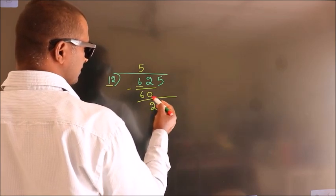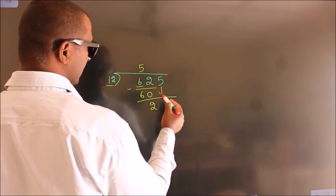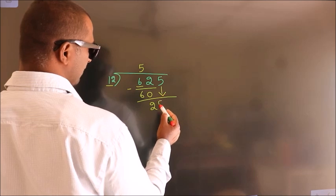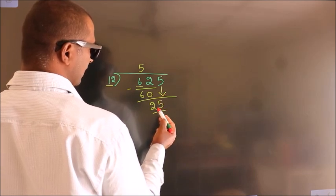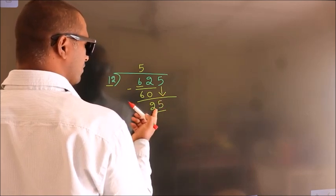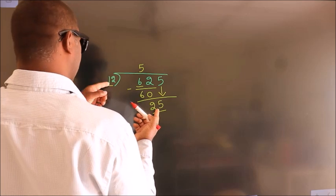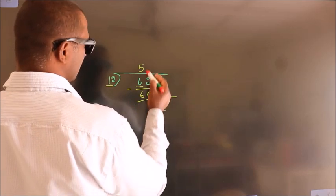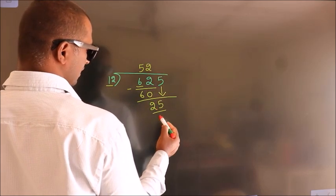After this, bring down the next number, so 5 comes down to make 25. A number close to 25 in the 12 times table is 12 times 2, which is 24.